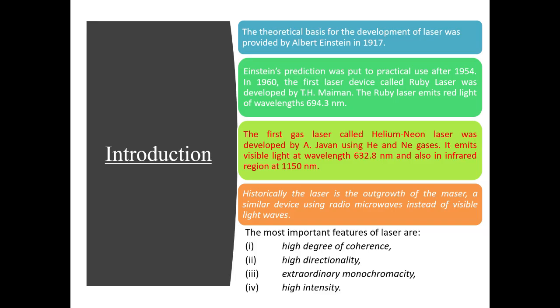The theoretical basis for the development of laser was provided by Einstein in 1917. Einstein's work was put to practical use after 1954, and in 1960, the first laser device called Ruby laser was developed. It was a solid-state laser. The first gas laser was the helium-neon laser.